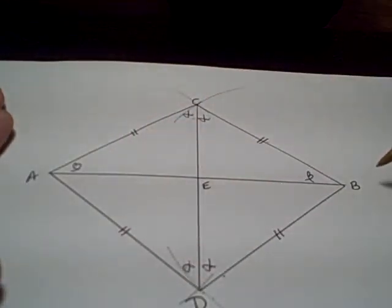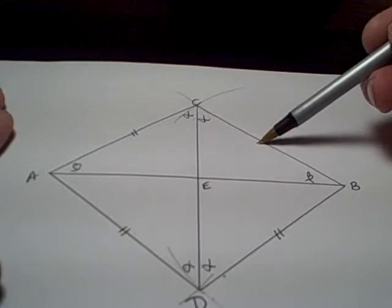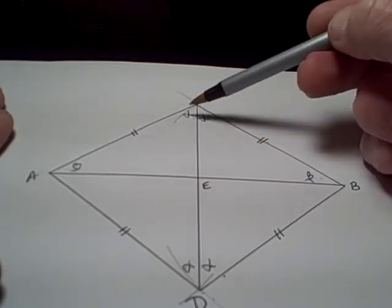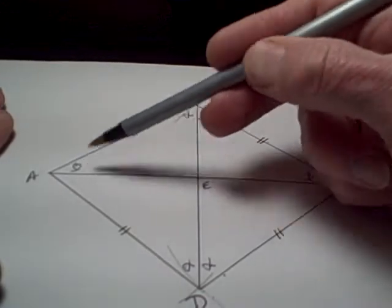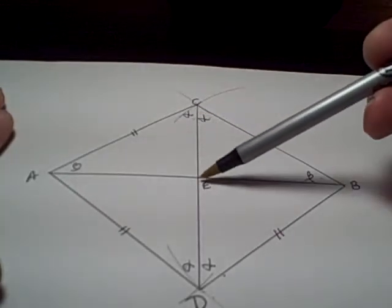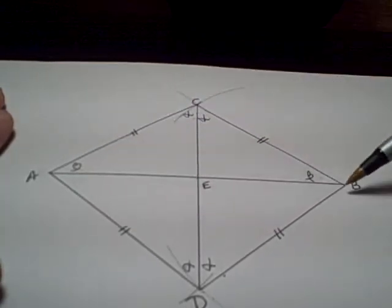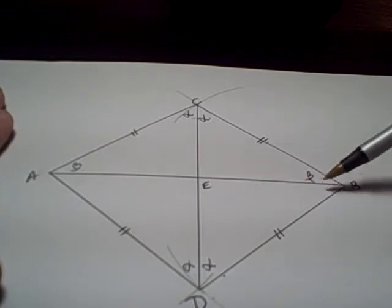All right. Now I've got angle, side, angle being equal to angle, side, angle, and therefore triangle ACEA is congruent to BCEB.